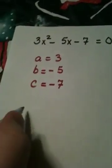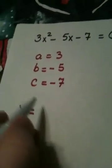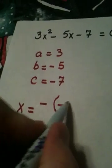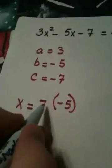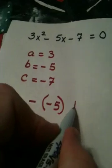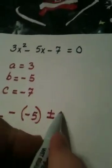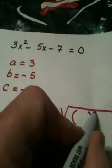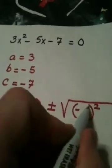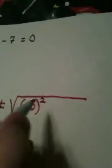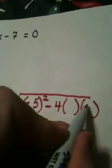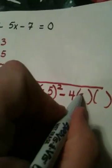So, when I write the formula x is equal to the opposite of b, b is negative 5, so the opposite of b plus or minus the square root of b squared, so that would be negative 5 squared, minus 4, a goes here and c goes here. a is 3, c is negative 7.